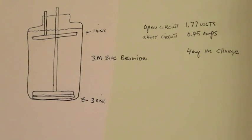After charging for four hours, the open circuit voltage was 1.77 volts, about 1.8 volts, right where it should be. And the short circuit current was about 0.95 amps.